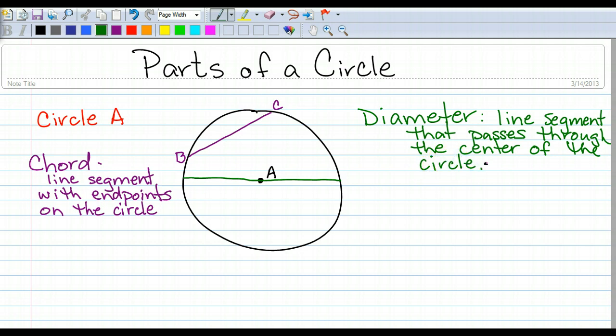Actually, instead of saying line segment on top of it, why don't you write chord? Because that's what it really is. It's a chord, but it's a chord that goes through the center of the circle. And you can call it a diameter, because the endpoints are on the circle. So let's give this C and D.